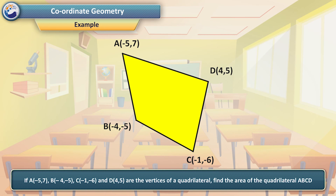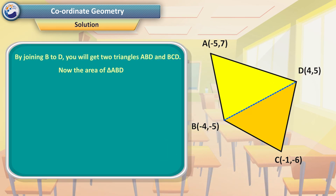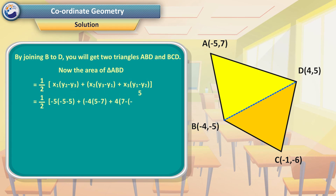For example, if A(−5, 7), B(−4, −5), C(−1, −6), and D(4, 5) are the vertices of a quadrilateral, find the area of quadrilateral ABCD. Solution: By joining B to D, we get two triangles ABD and BCD. The area of triangle ABD = ½ |x₁(y₂ − y₃) + x₂(y₃ − y₁) + x₃(y₁ − y₂)| = ½ |(−5)(−5 − 5) + (−4)(5 − 7) + 4(7 − (−5))|.